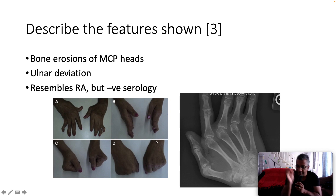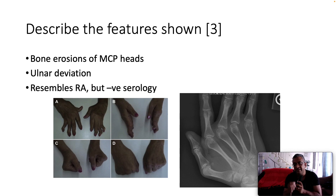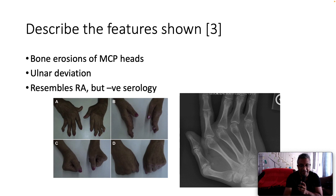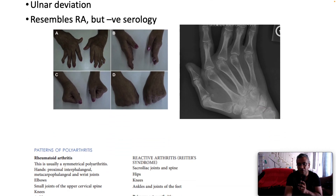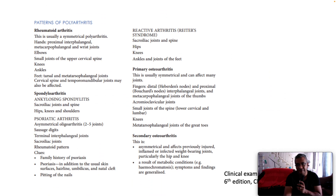So by definition, Jaccoud's Arthropathy is a non-deformative arthritis which looks like rheumatoid arthritis, but with negative serology — often with a history of rheumatic fever as a child.